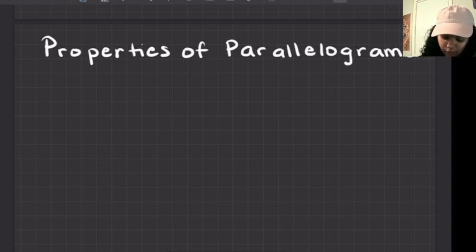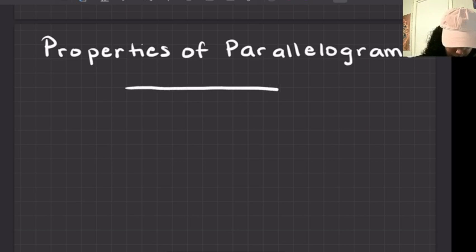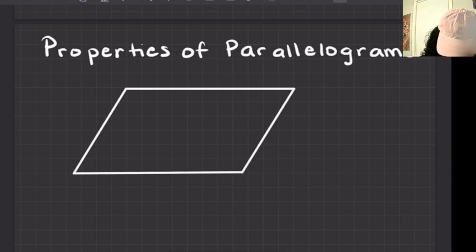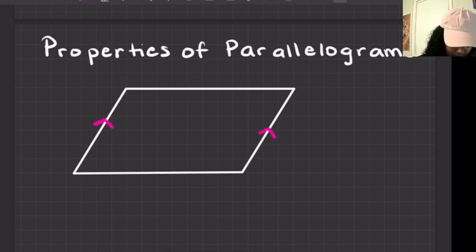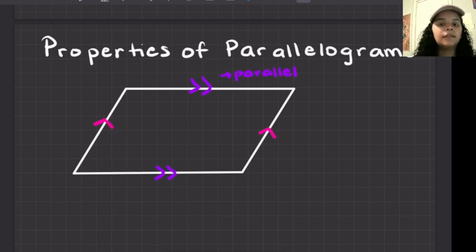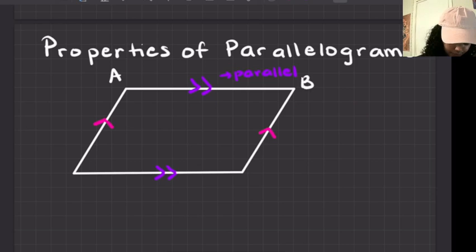A parallelogram — I love that word — is a quadrilateral, which is a four-sided shape, where the opposite sides are parallel to each other. That little arrow marking on the screen means parallel, so whenever you see that on a test or worksheet, that means parallel. These two sides are parallel to each other, and these two sides are parallel to each other.